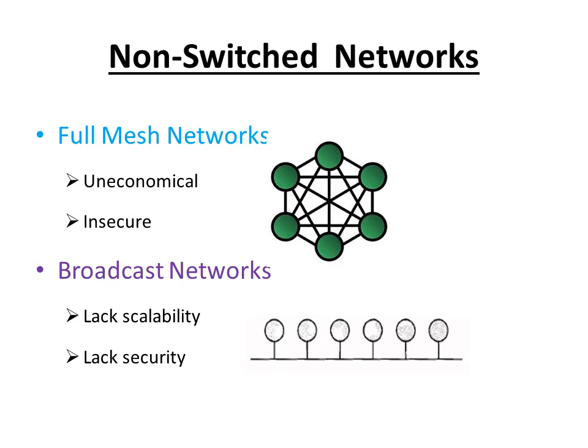The next type of non-switched network is broadcast. Each terminal is connected to a common shared medium. Information is sent to every node and the destination chooses the appropriate information, which means it lacks security as the information is visible to all terminals. Also, as the number of nodes increases, scalability becomes an issue due to increasing chances of data collisions.